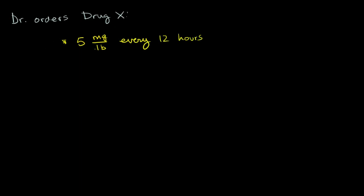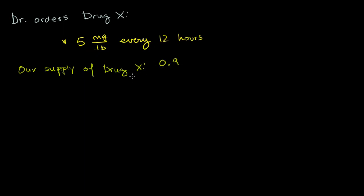But our supply of the drug — our supply in green — it's not just nuggets in milligrams. It's a solution. There's a certain amount of grams per every milliliter that we have of the solution, dissolved in some, probably some water. My wife, who is a doctor, says it's essential to write the zero in front of the decimal. We have 0.9 grams per milliliter of solution.